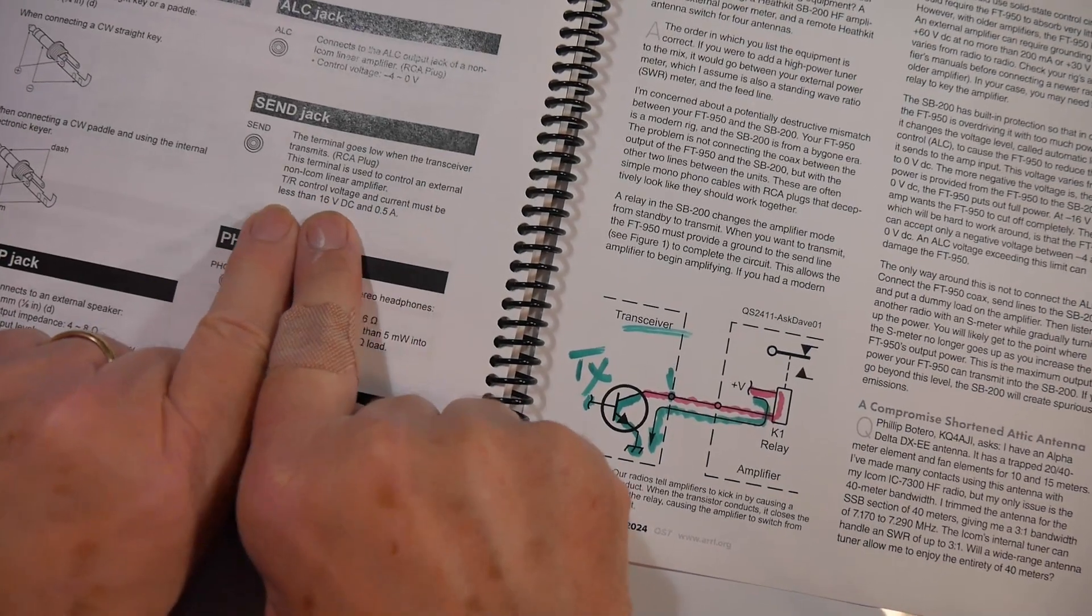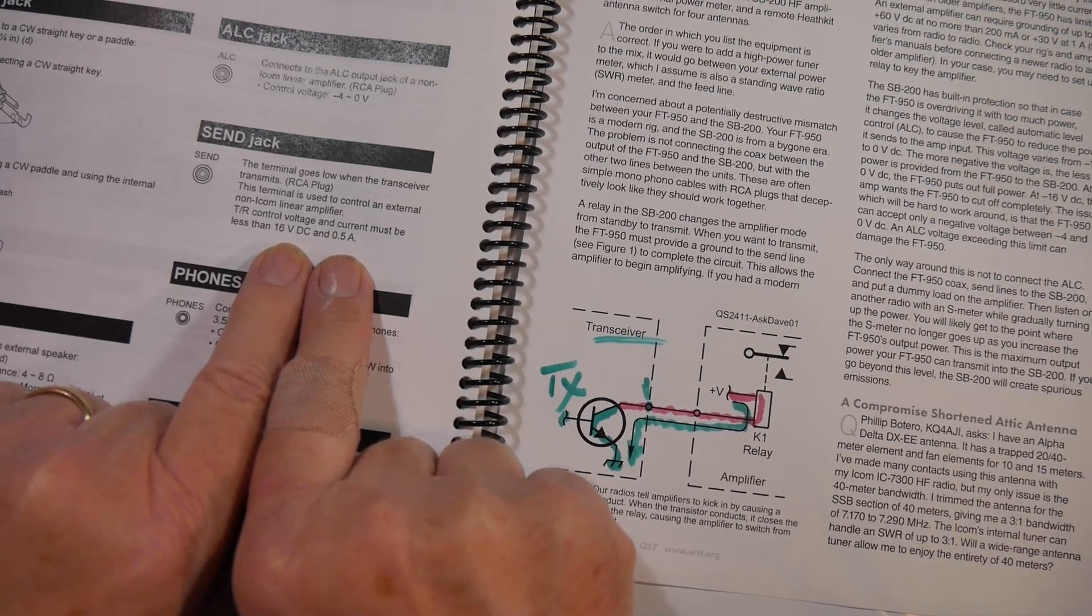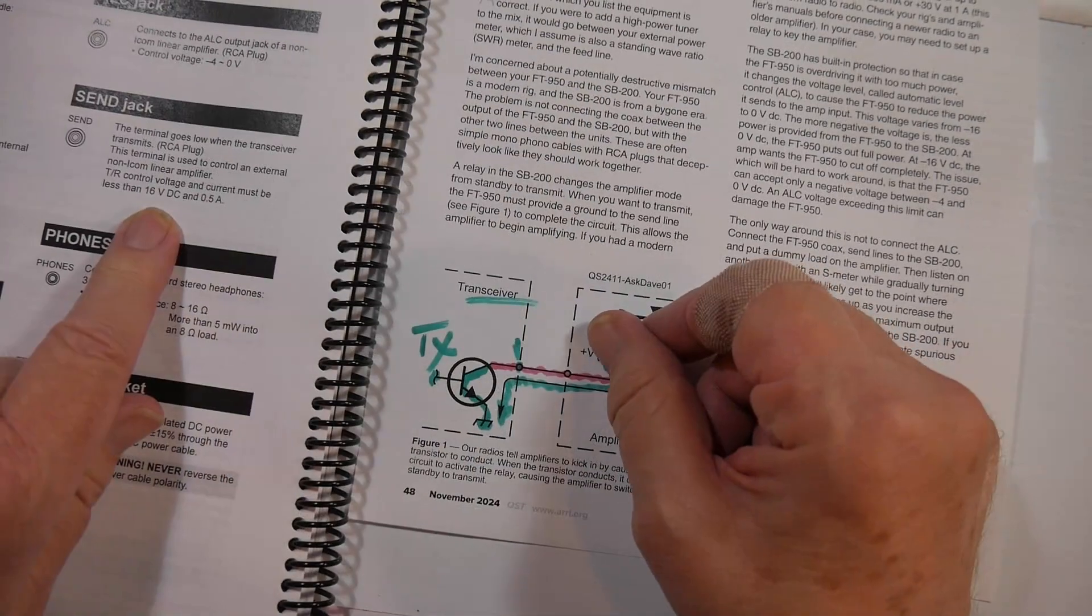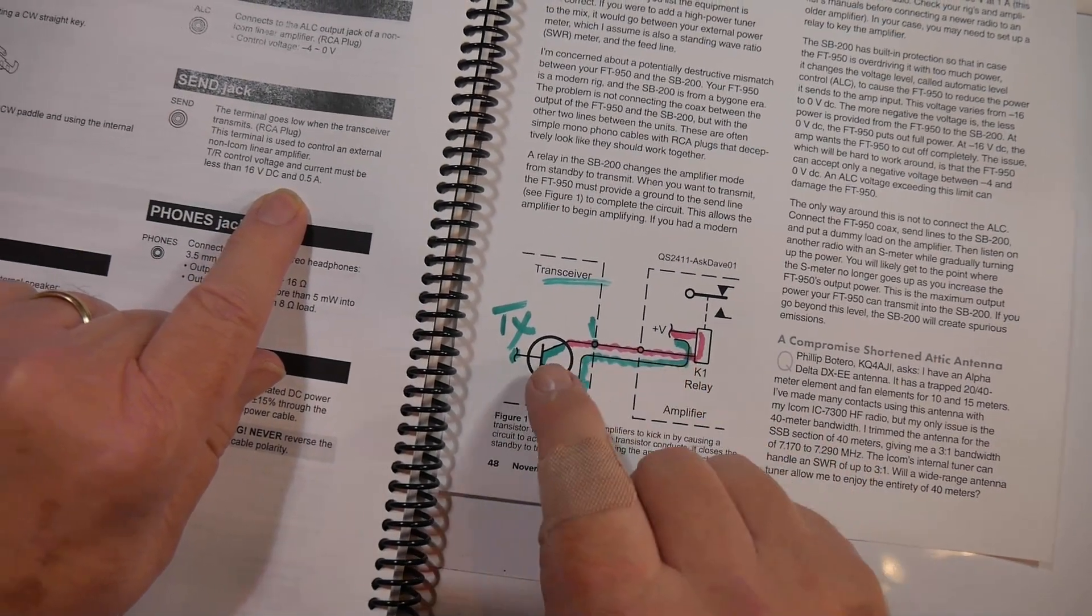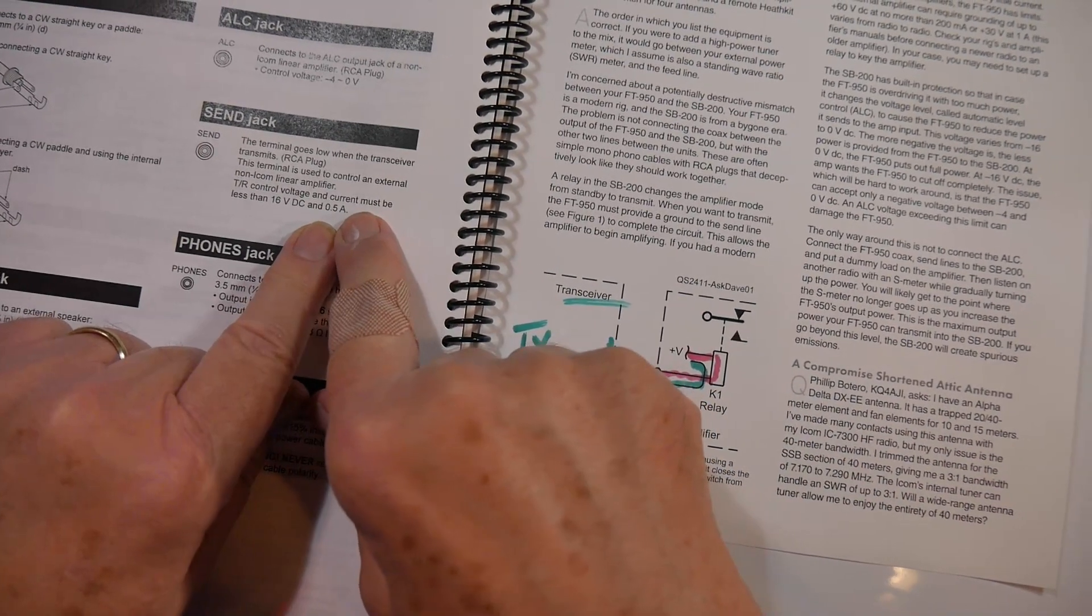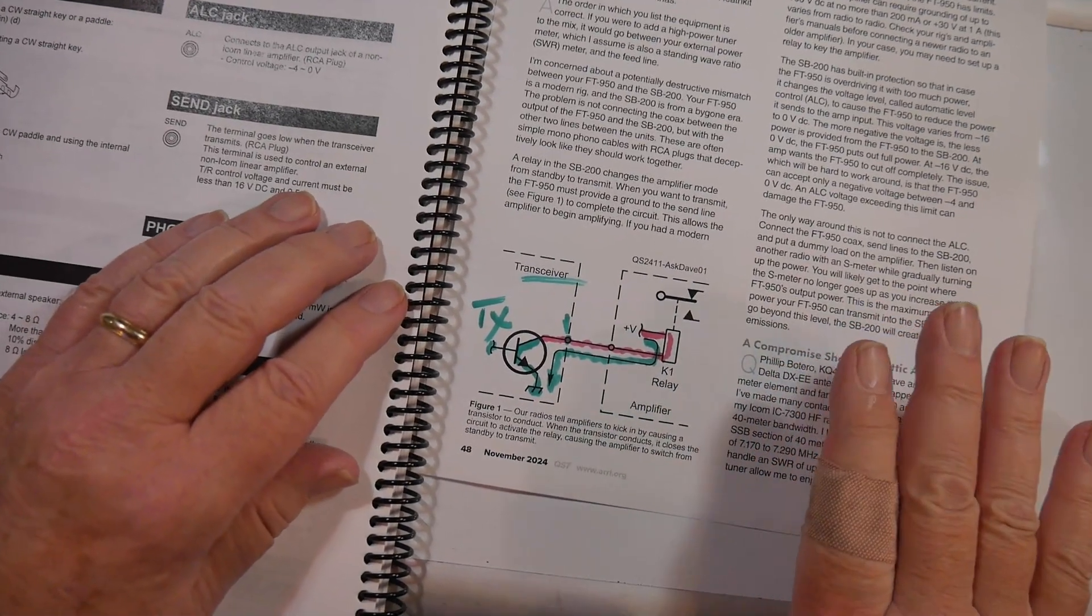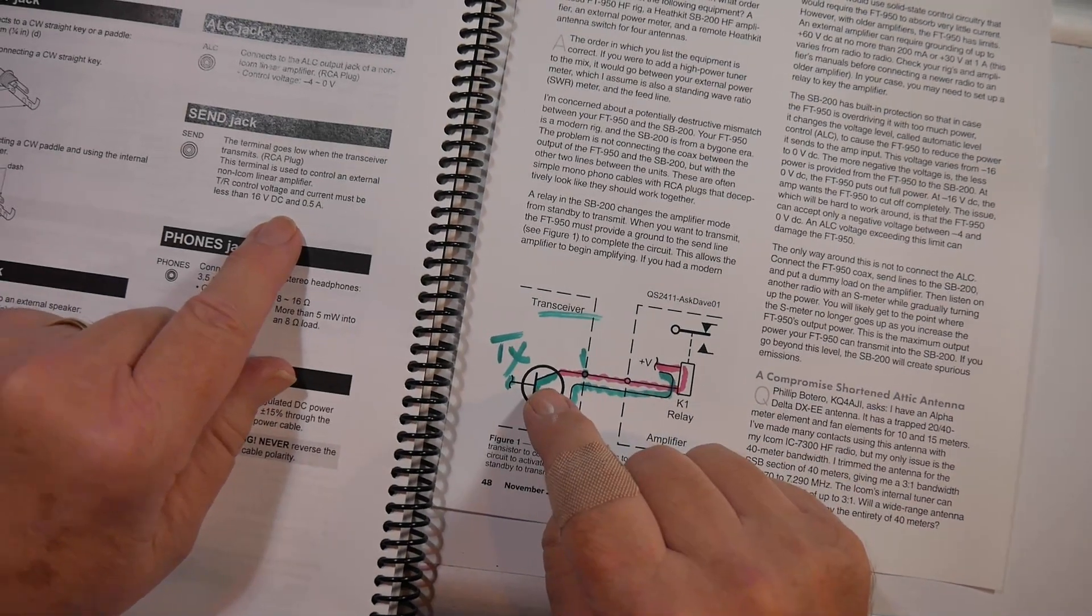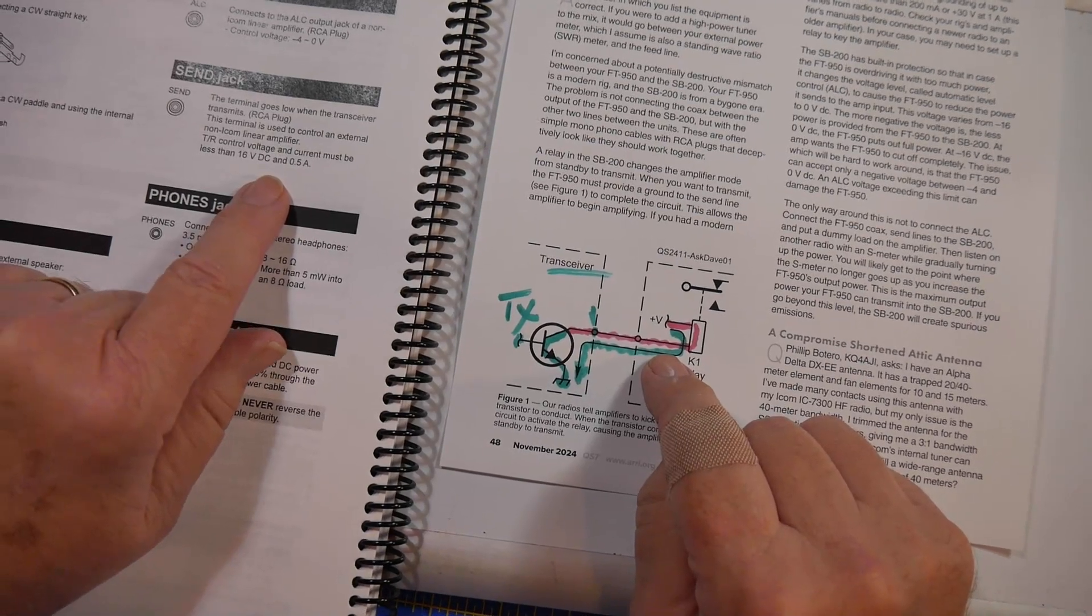Here are their requirements. The transmit received control voltage and current must be less than 16 volts DC. In other words, V has to be less than 16 volts. And when this closes, the total amount of current used to close that relay needs to be less than one half amp. Now, a lot of older transmitters will have higher control voltages because they're expecting a relay on this side rather than a transistor. And they may have higher currents.